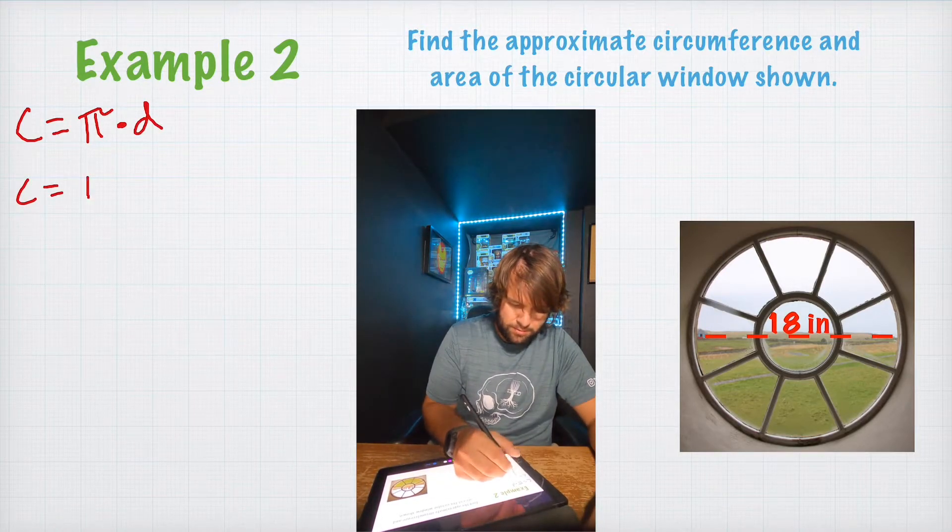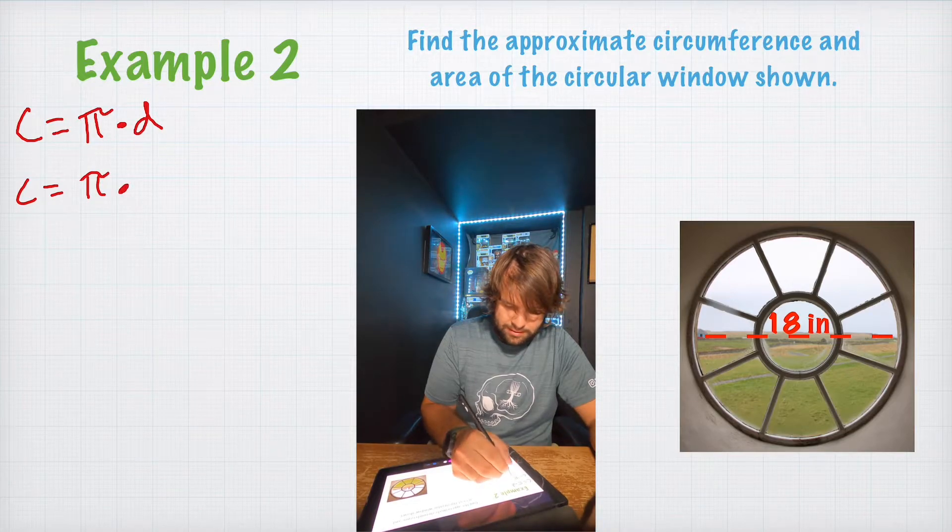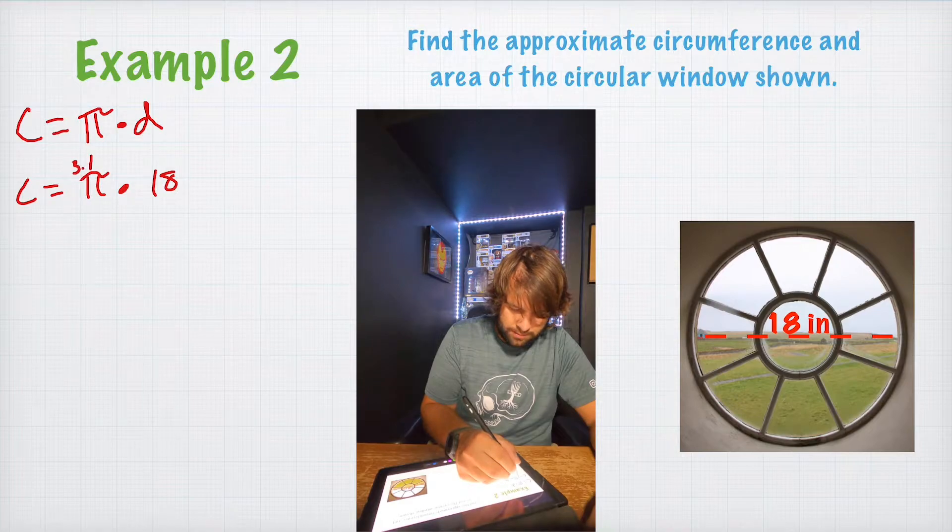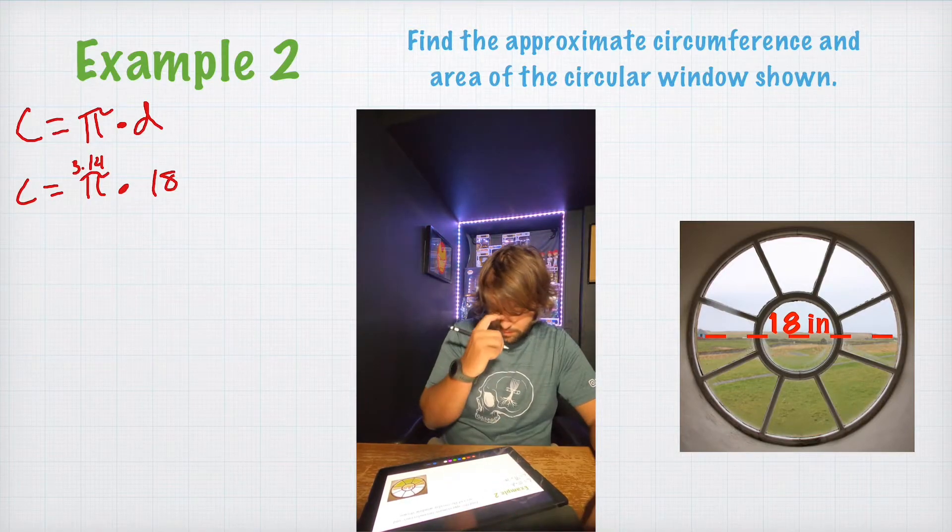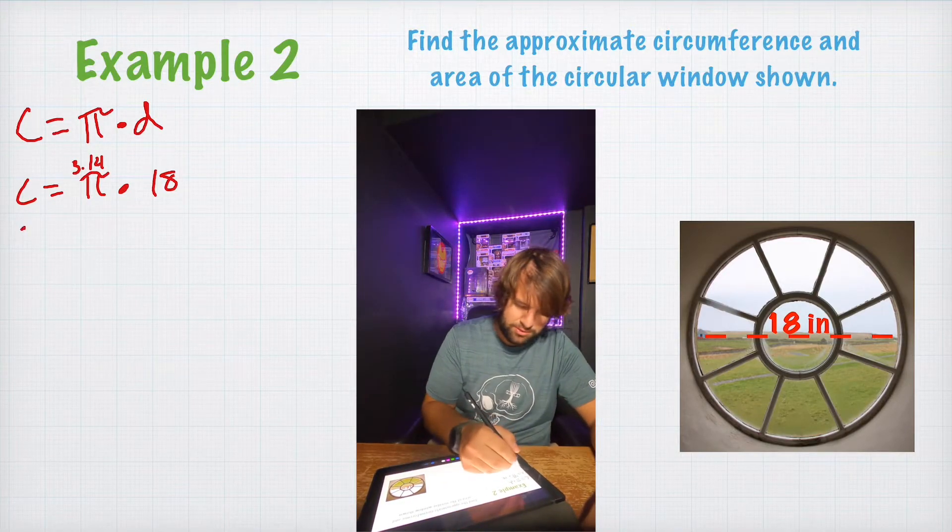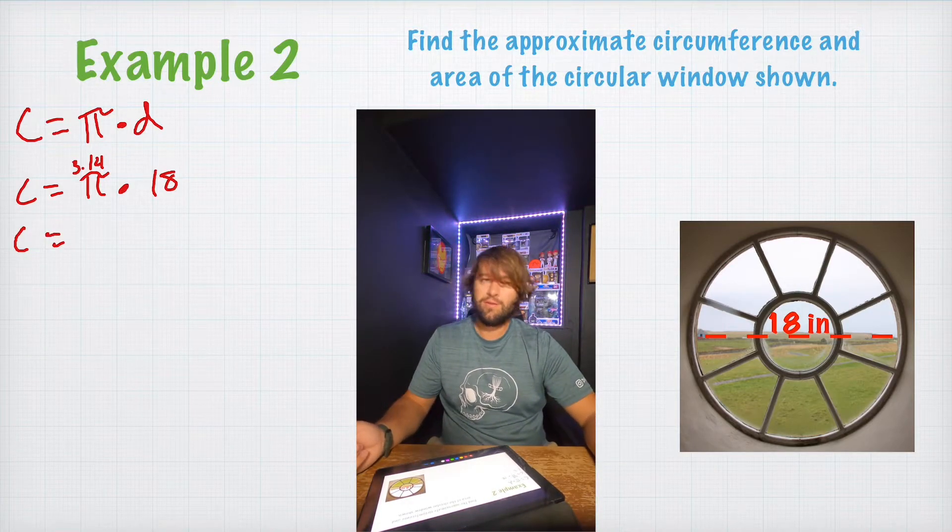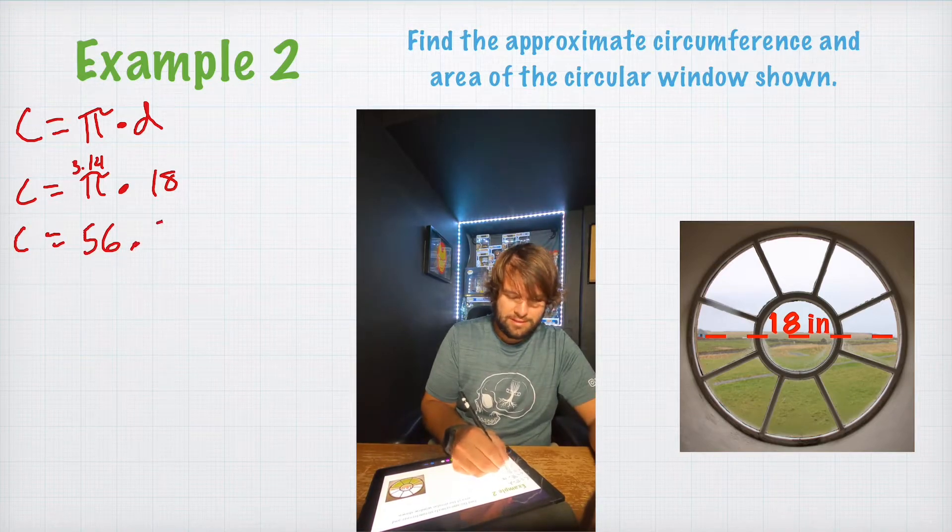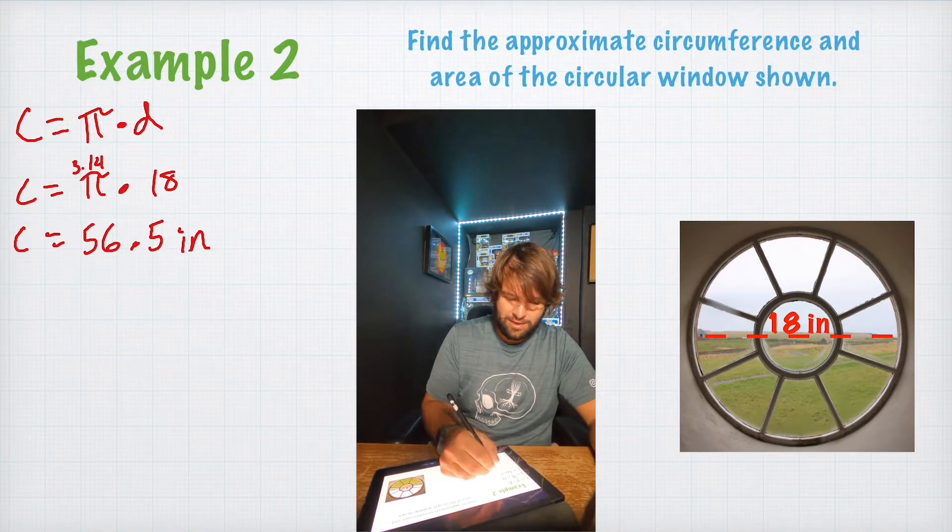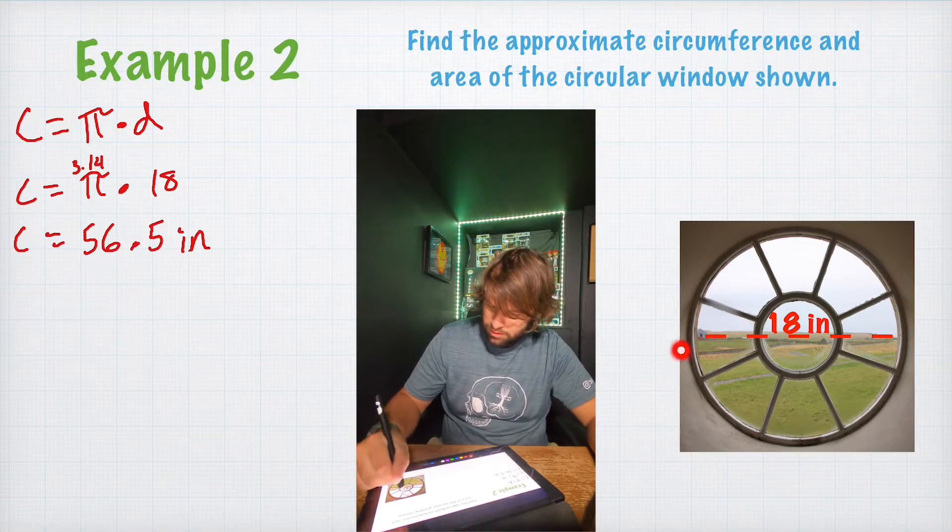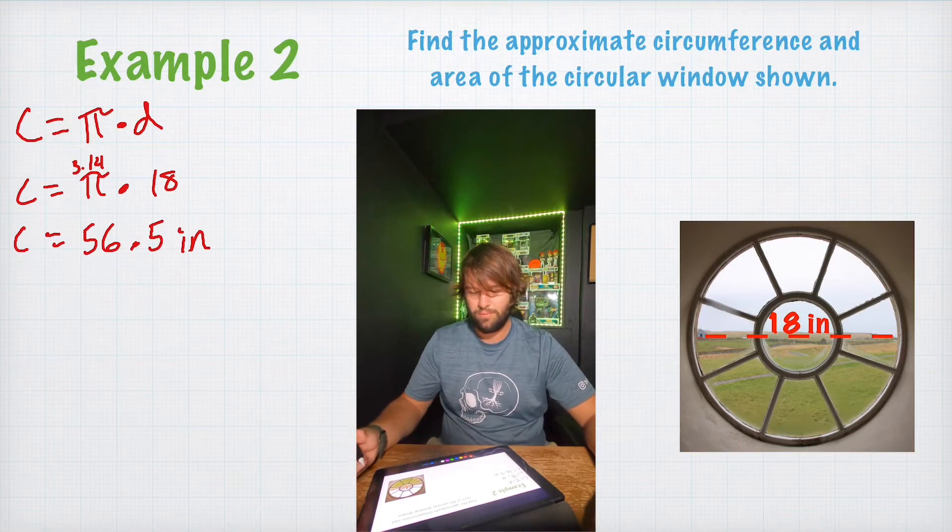So, C equals pi times 18. Or, I'm going to write it up here. 3.14 is what we're going to punch in our calculators, or work out by hand if you really want to. So, 3.14 times 18 is going to be 56.52 inches. That's going to be how far it is total around that window.